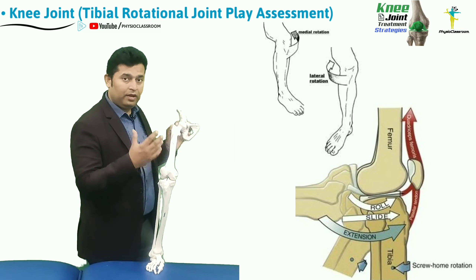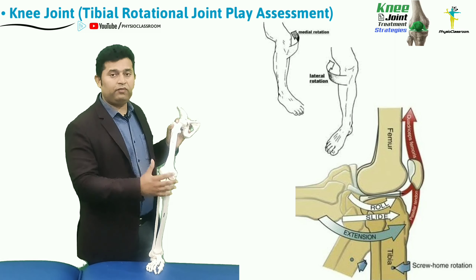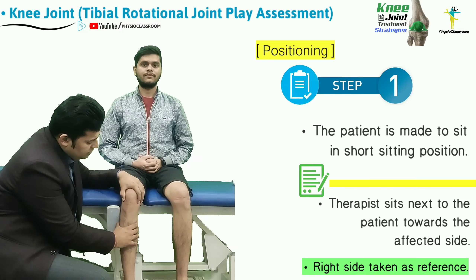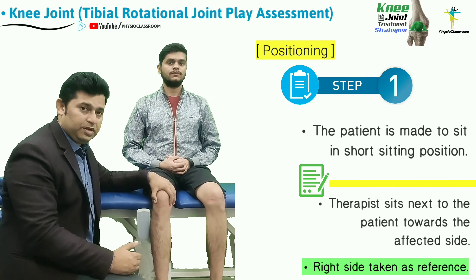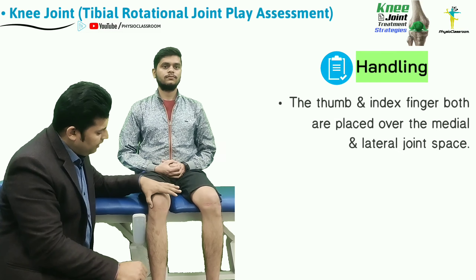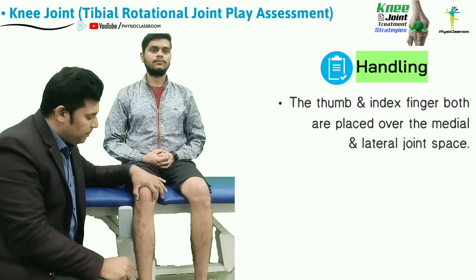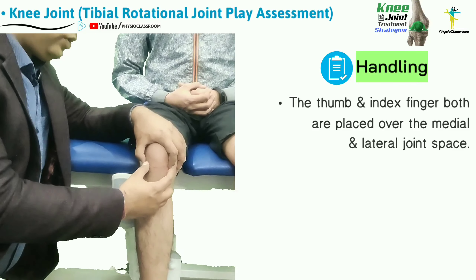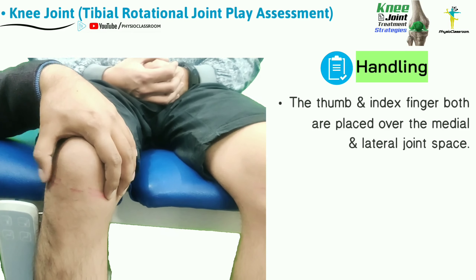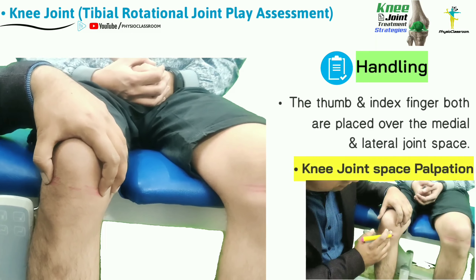It is important that this biomechanical aspect of the knee joint remains intact for normal functioning. To evaluate the tibial rotational joint play, make the patient assume the short sitting position. The therapist sits by the side of the patient being tested, and the left hand thumb and index finger are placed over the knee joint space on both the medial and lateral sides.